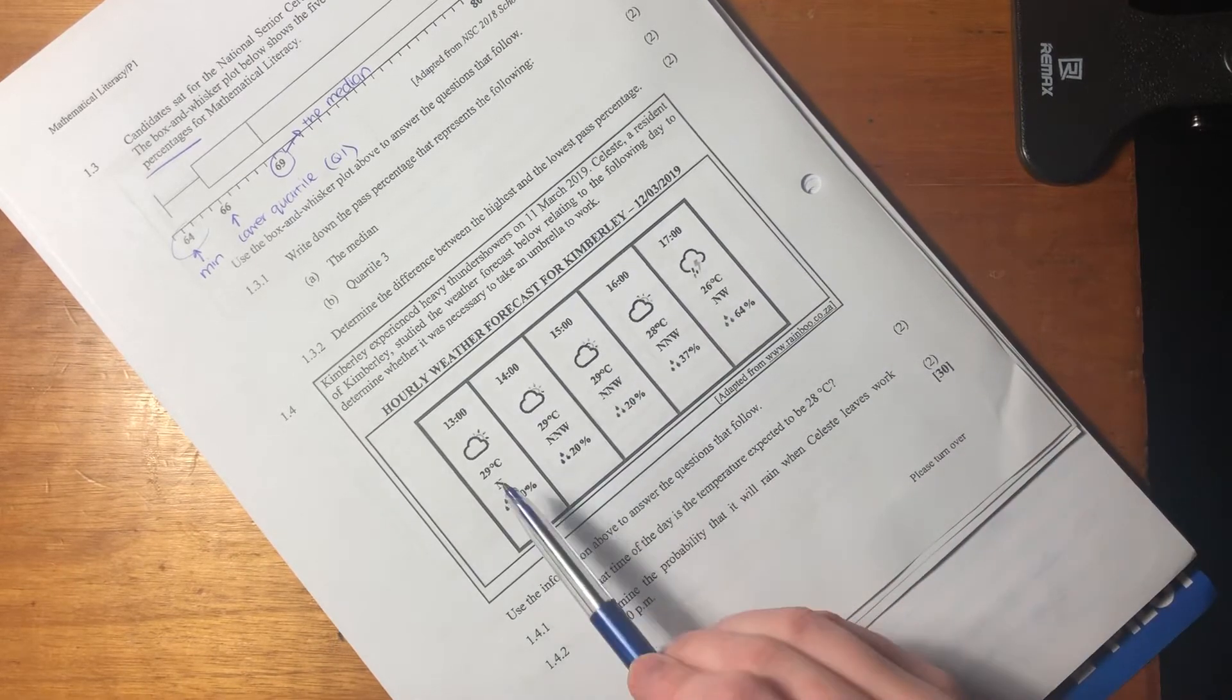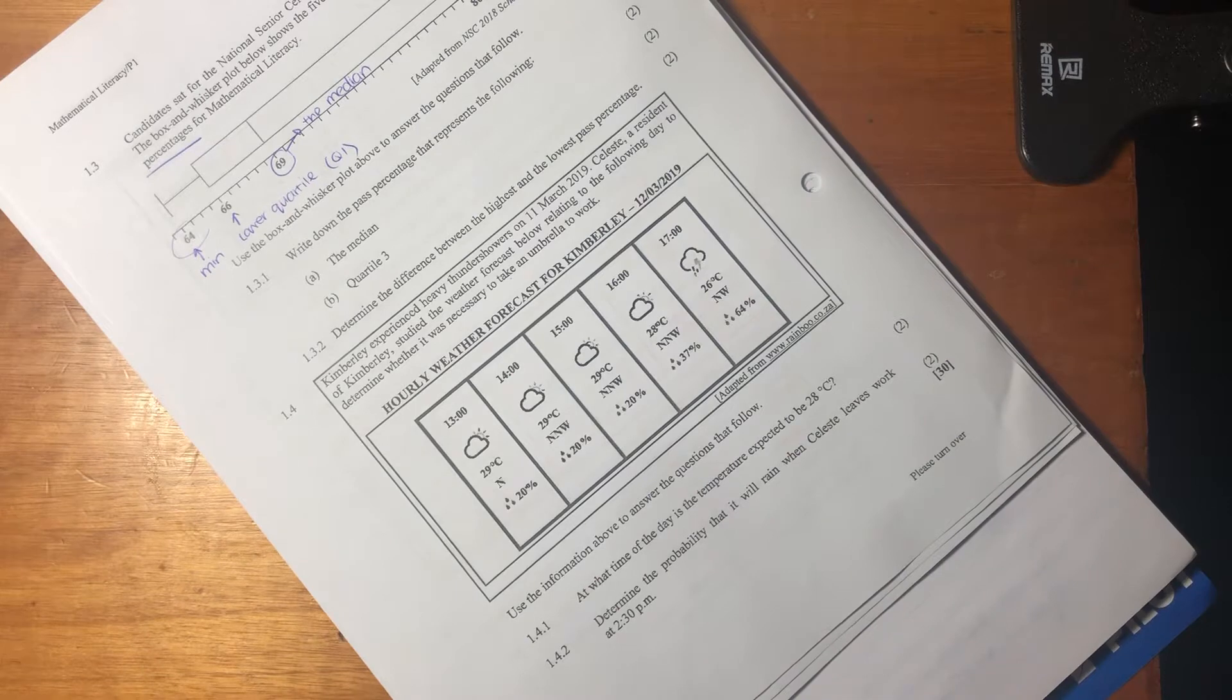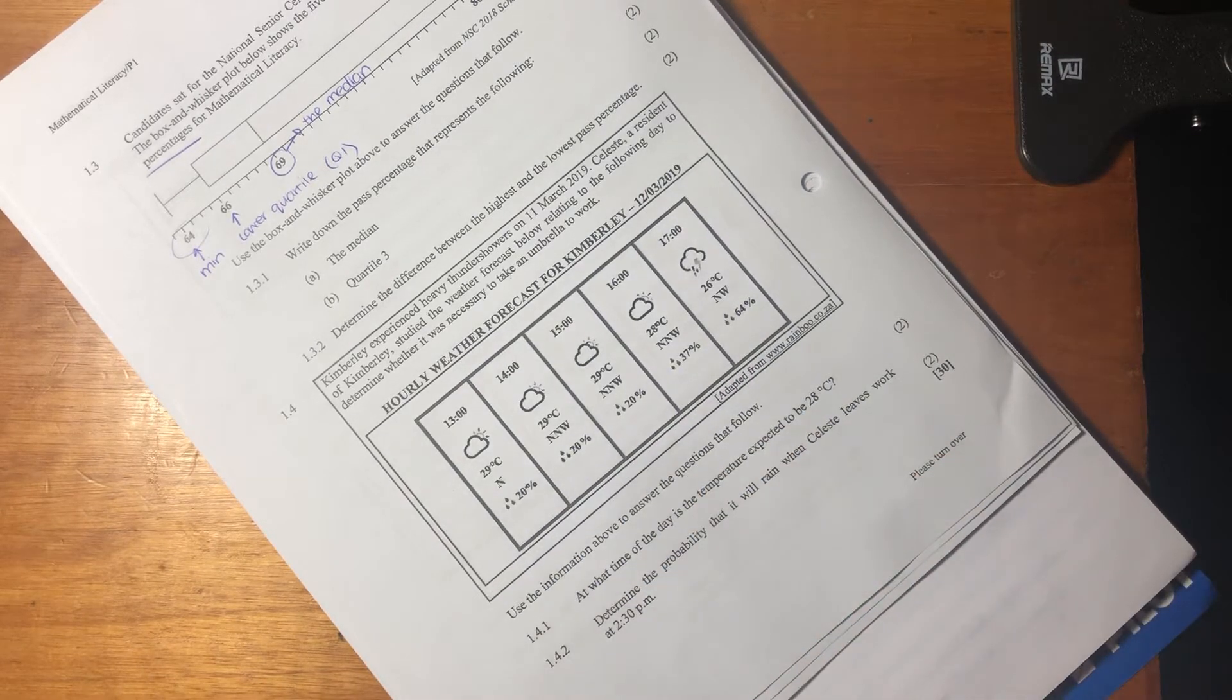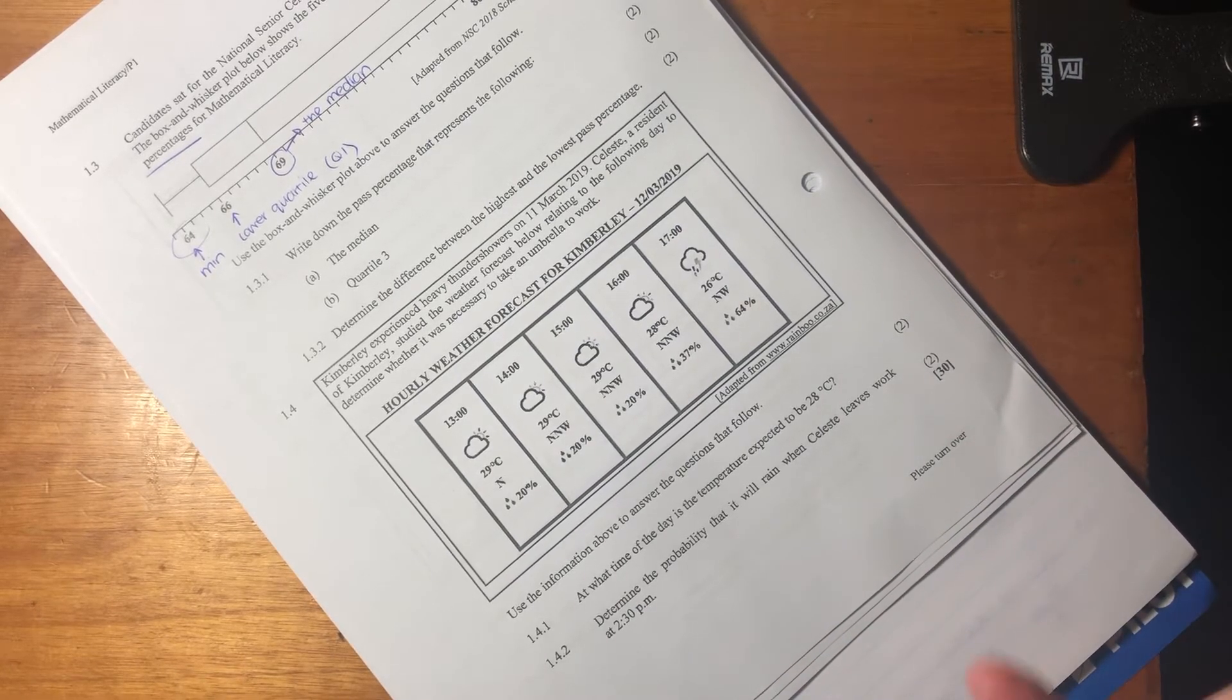Okay, then we have all these different degrees Celsius. That's how warm it's going to be. Then it also talks about north, northwest. I think that has to do with wind, but also the question will help us here, right? So let's not get too phased by that.